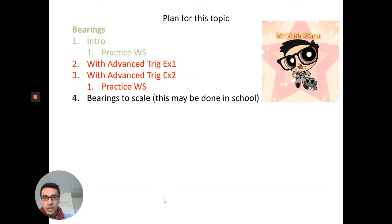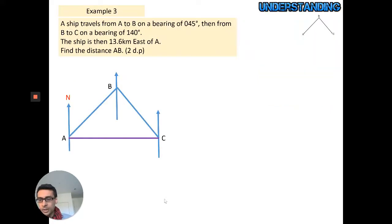a few examples that I'm going to go through, but you'll see some patterns. Example 3: a ship is traveling from A to B on a bearing of 45 degrees, then from B to C on a bearing of 140 degrees. The ship is then 13.6 kilometers east of A. Find the distance AB. Here's the diagram. We label what we know: that's 45, 140, 13.6.